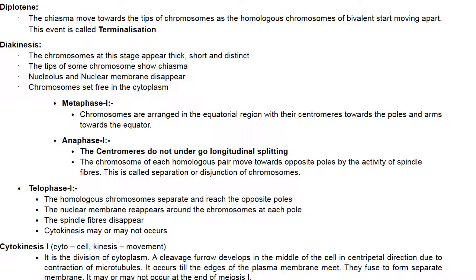In metaphase I, chromosomes are arranged in the equatorial region with their centromeres towards the poles and arms towards the equator. At anaphase I, centromeres do not undergo longitudinal splitting. Instead, the chromosomes of each homologous pair move towards opposite poles by the activity of spindle fibers — this is called separation or disjunction of chromosomes.